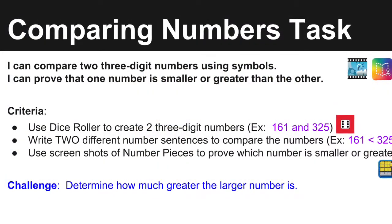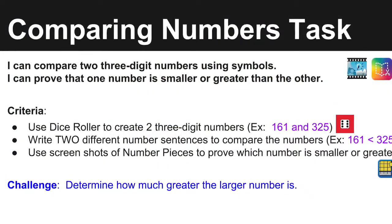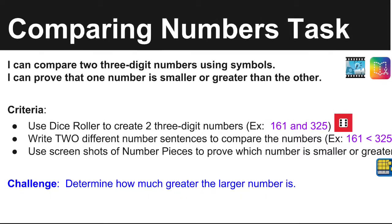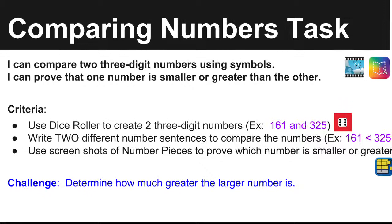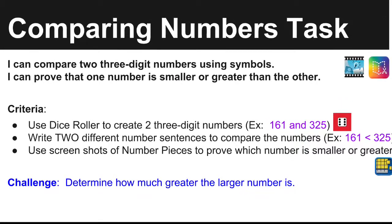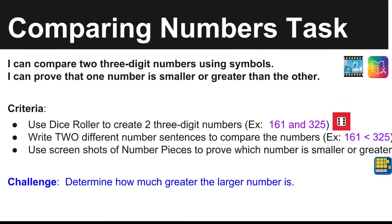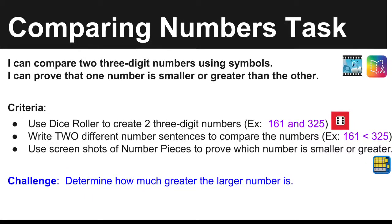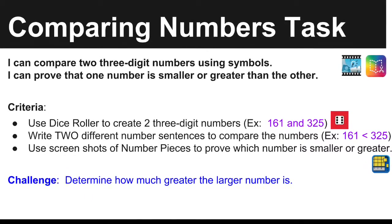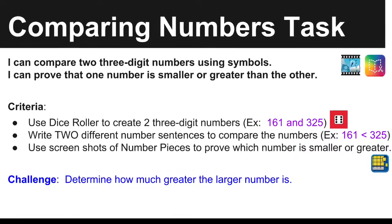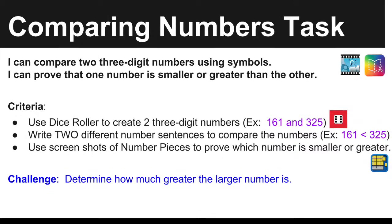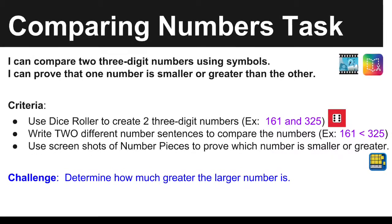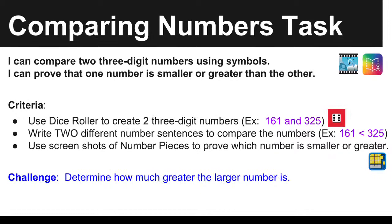The next task is the Comparing Numbers task. The learning targets include comparing two three-digit numbers using symbols and proving that one number is smaller or greater than the other. Once again, students can choose between Explain Everything or Book Creator. The criteria includes using Dice Roller to create two three-digit numbers, writing two different number sentences to compare those numbers, and using screenshots of Number Pieces to prove which number is smaller or greater.